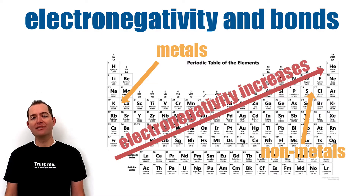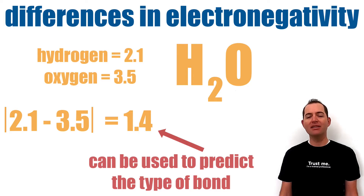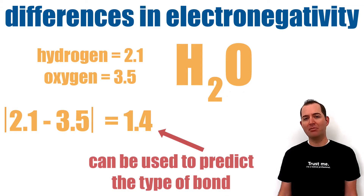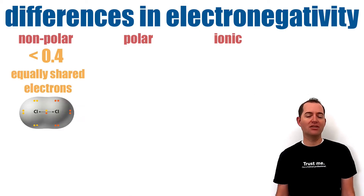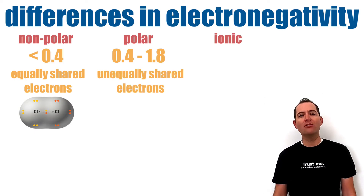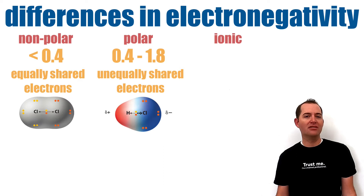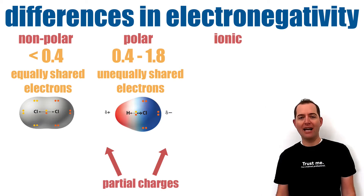This means that non-metals have the highest electronegativities and metals tend to have the lowest. The absolute value of the electronegativity difference between two atoms in a compound can be used to predict the type of bond formed. The smallest differences represent nonpolar covalent bonds, where electrons are shared equally, while intermediate differences represent polar covalent bonds with unequal sharing of electrons.